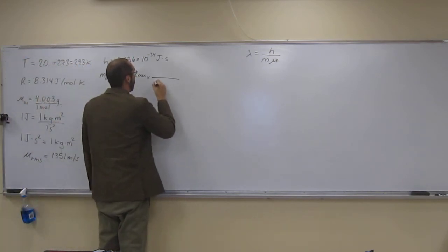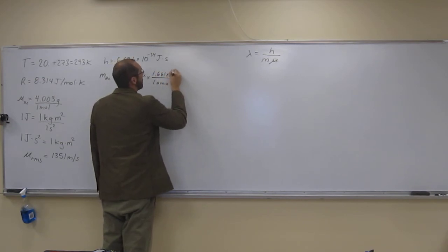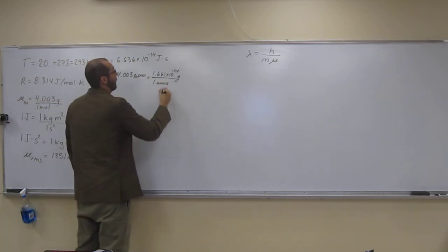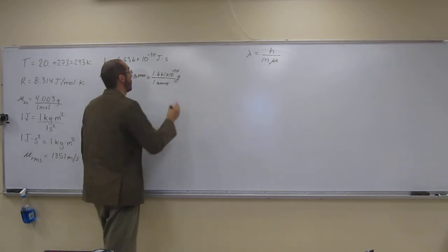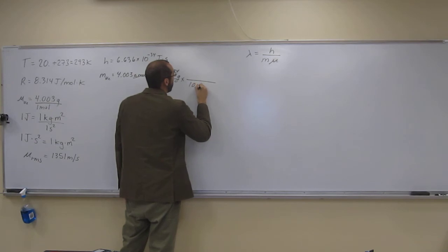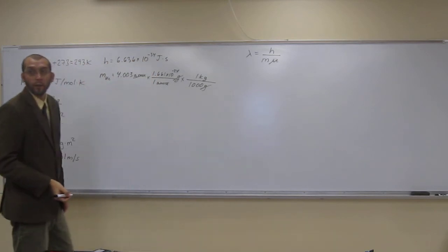So, for every one amu, we've got 1.661 times 10 to the negative 24th grams, like that. So that's a conversion factor that you're gonna be given on the test. And, of course, for every 1,000 grams, you've got one kilogram. Why are we doing that? Because we're gonna have to convert into kilograms.